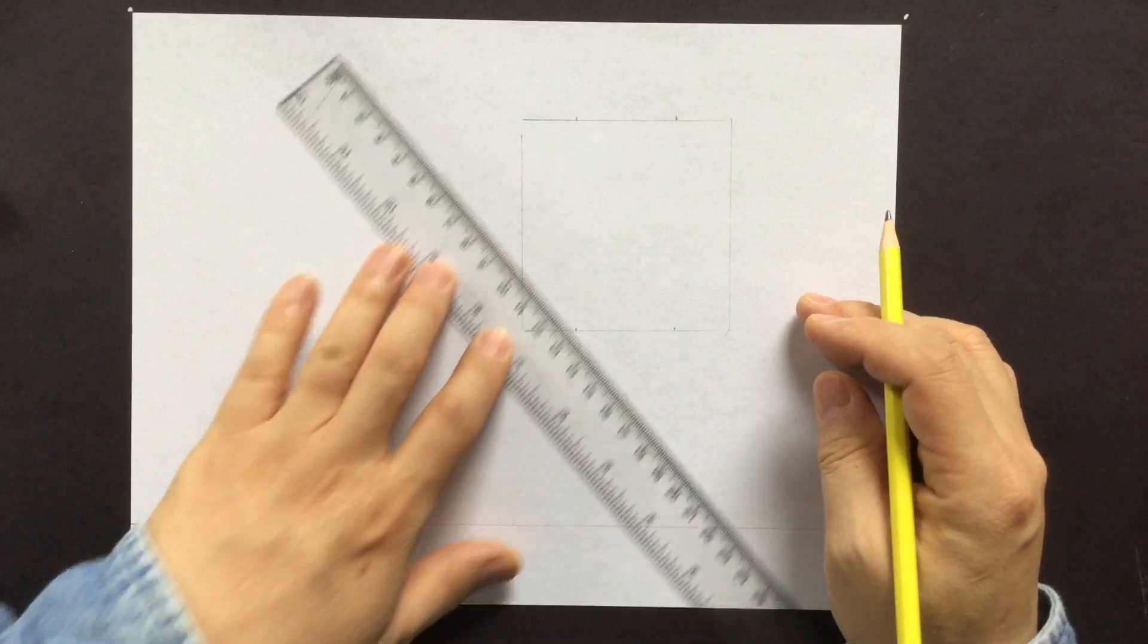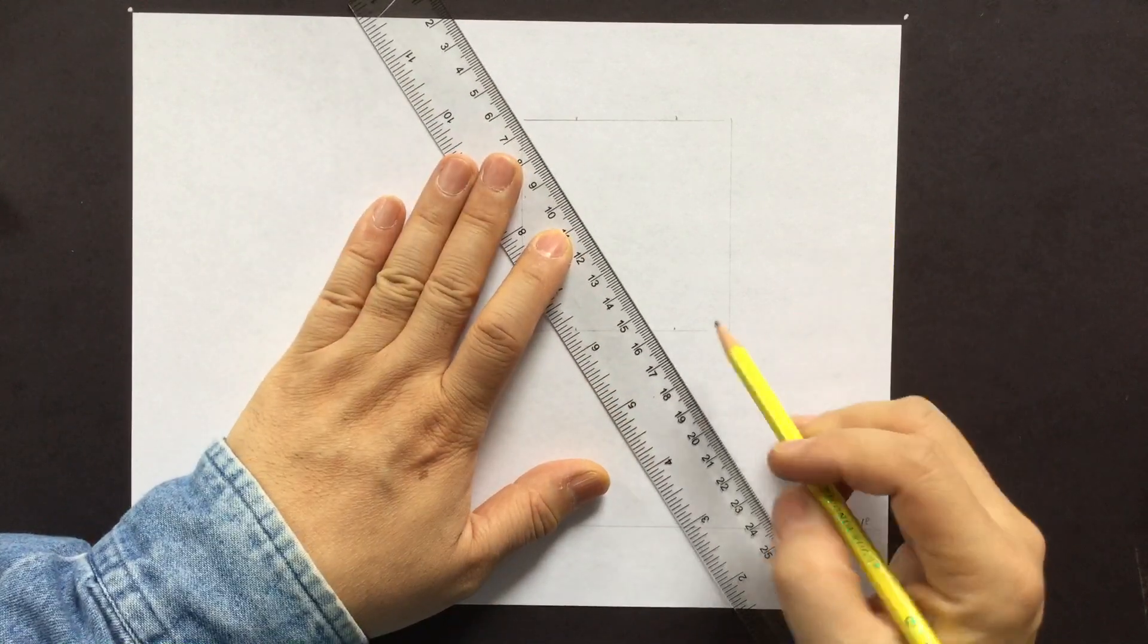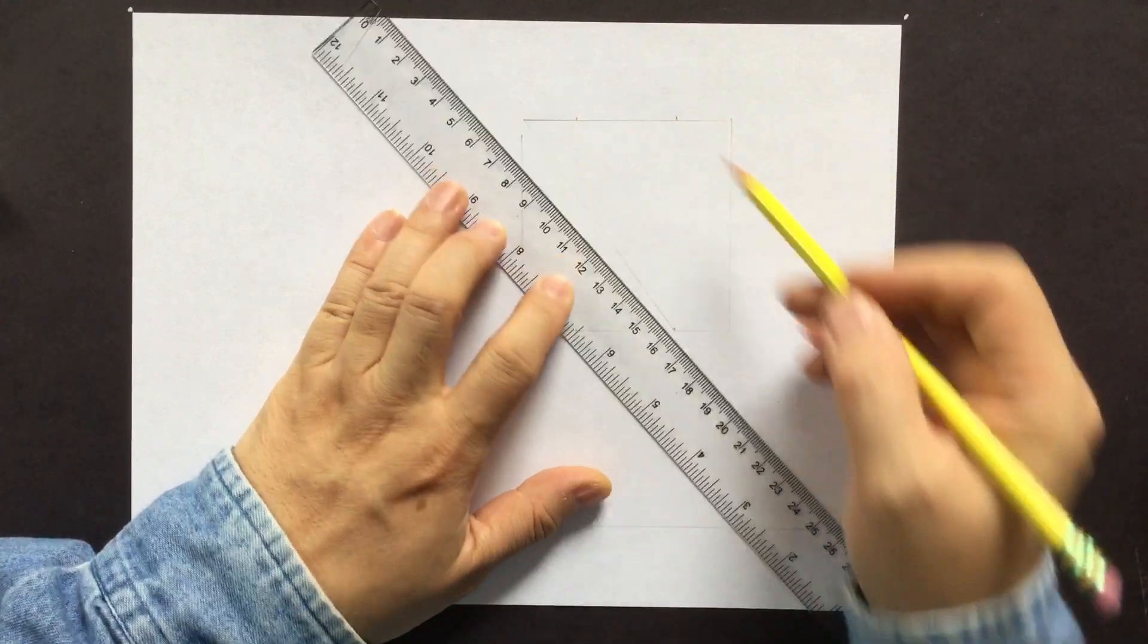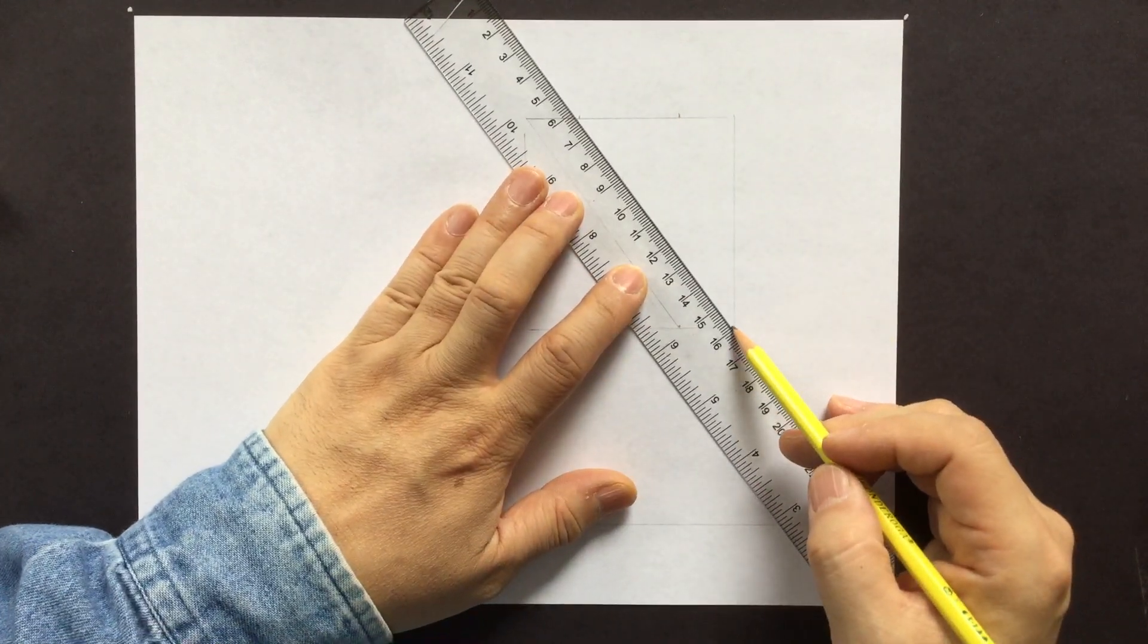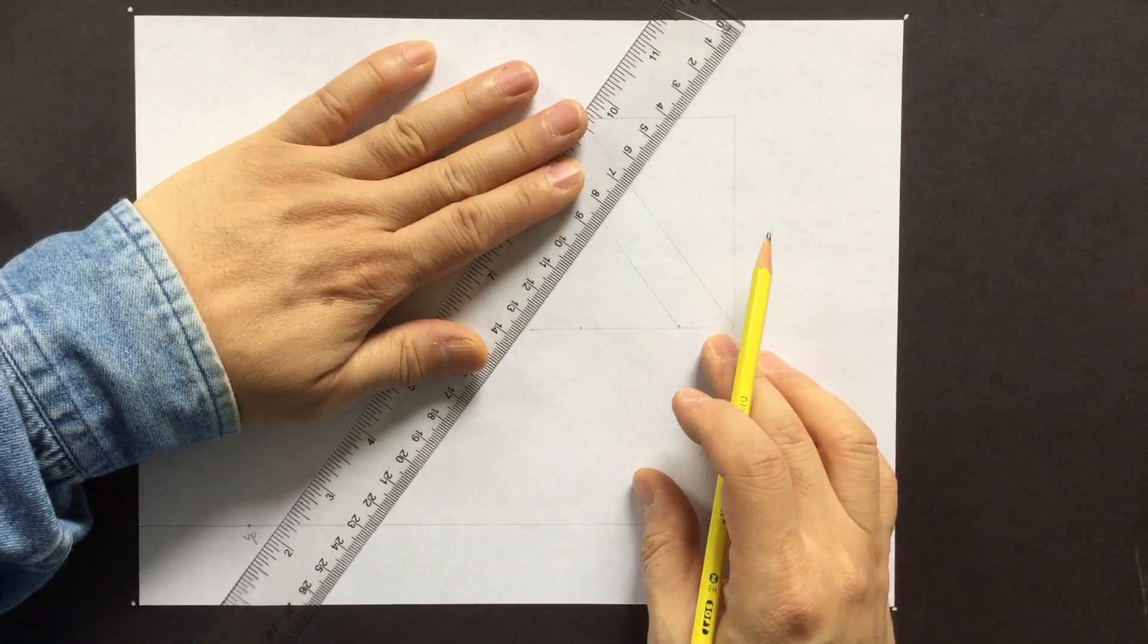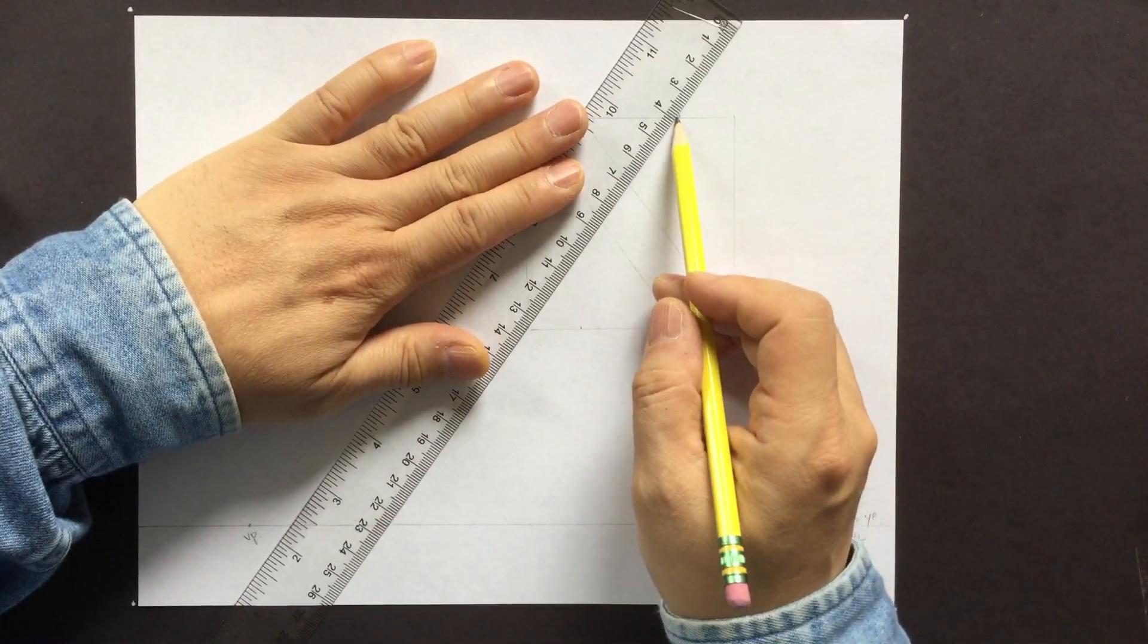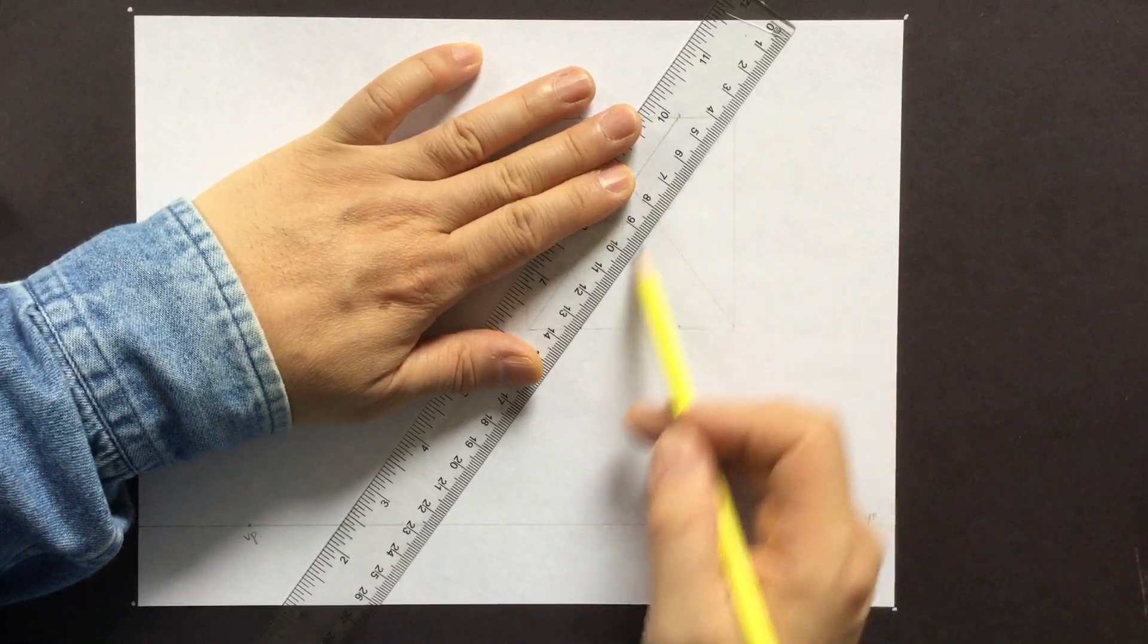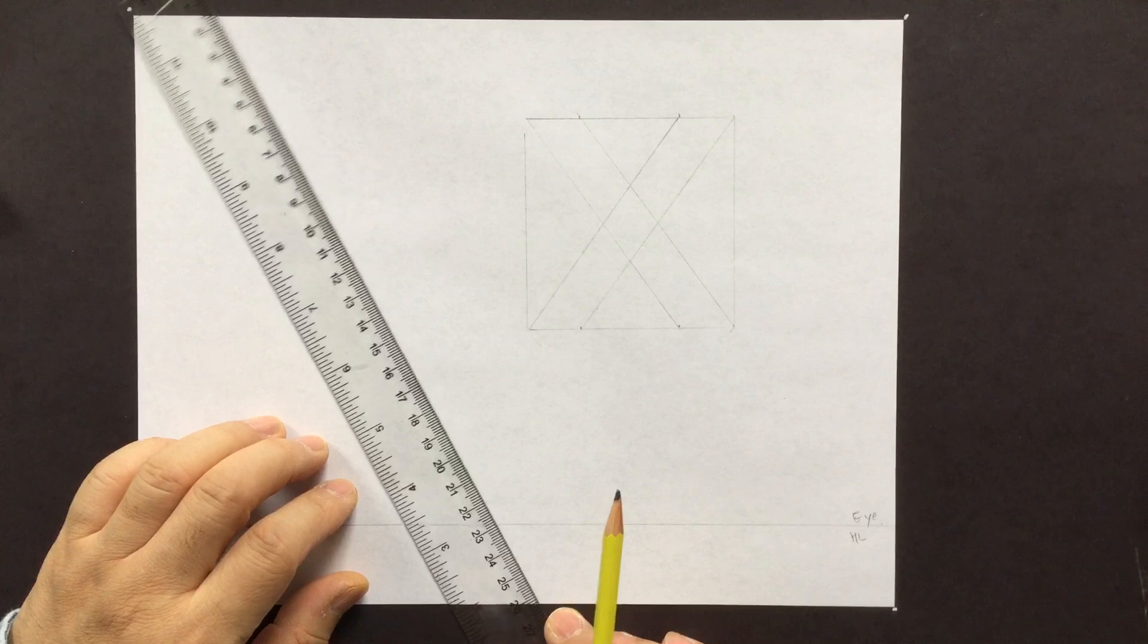So after that, all you have to do is connect the corners. And then there we go, we have an X.